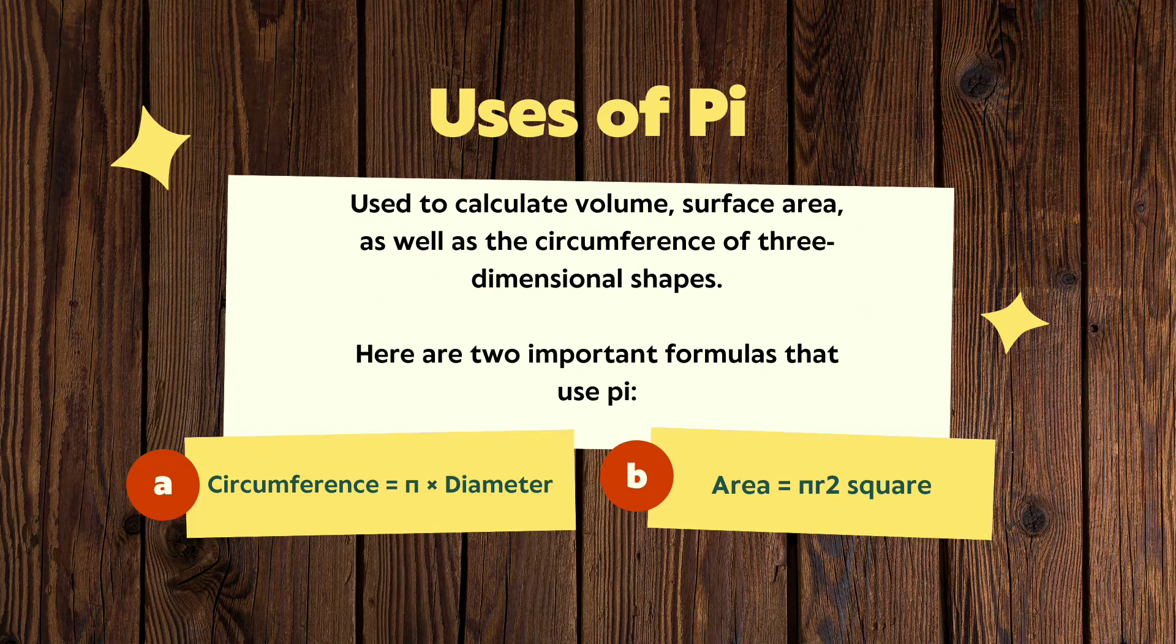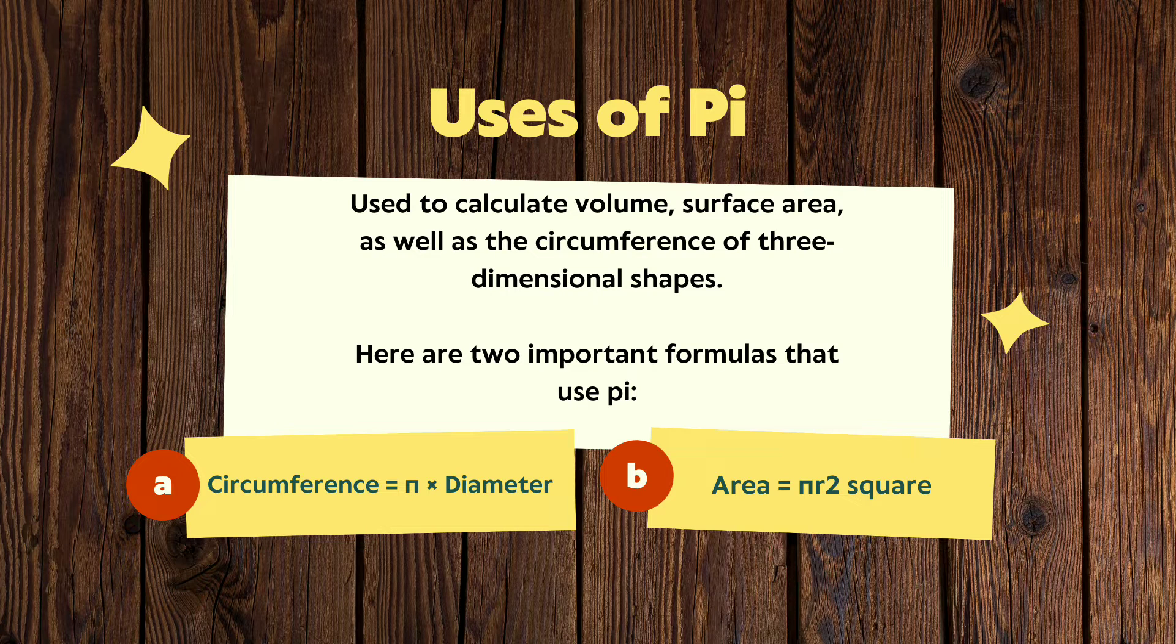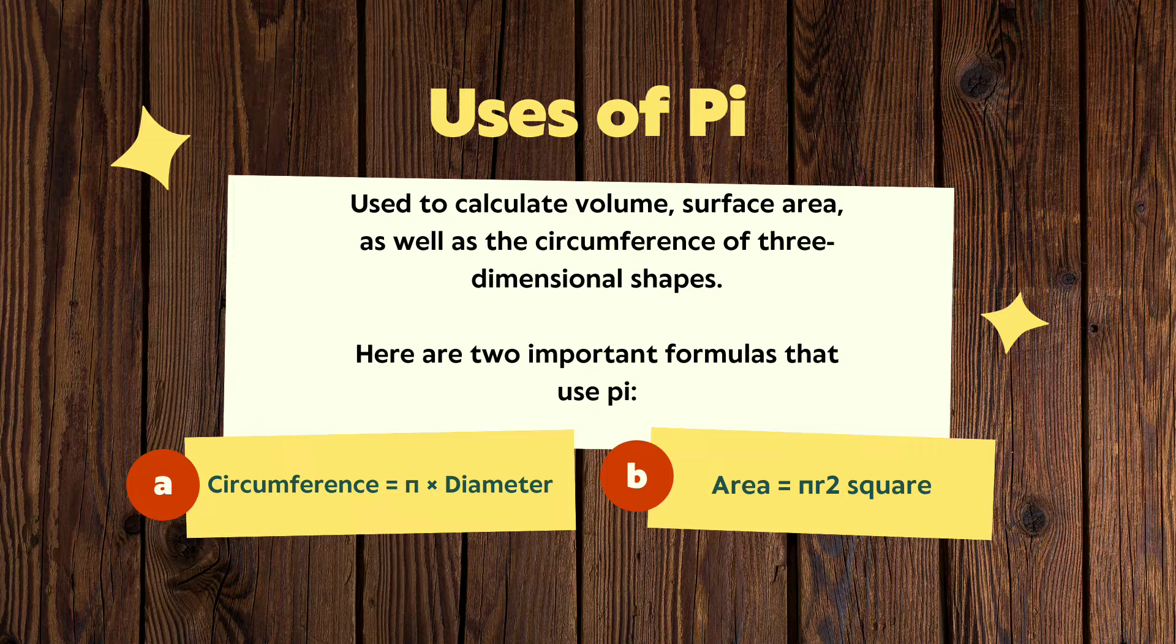Now let's discuss its uses. Uses of pi: basically it is used to calculate volume, surface area, as well as the circumference of three-dimensional shapes. Here are two important formulas that use pi.